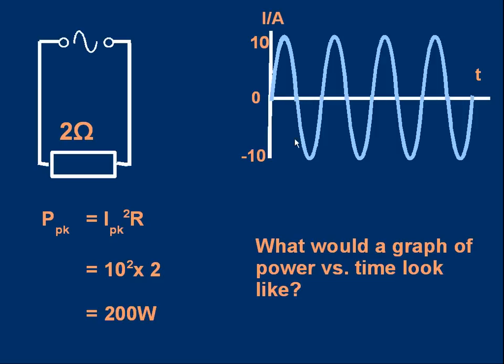It's continuously changing values — a sinusoidal oscillating alternating current. Let's work out the peak power: the power when the current is at a maximum of 10 amps. We can use I²R, or specifically I_peak² × R, to get the peak power.